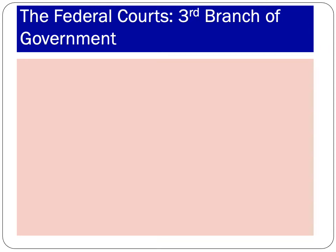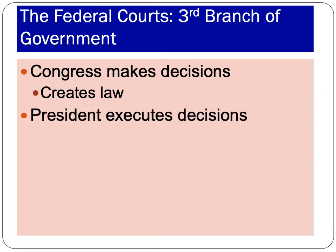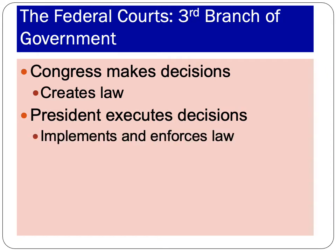This topic on the federal courts closes out our exploration of the institutions of government. The federal courts, or the judiciary, is the third branch of government. We've learned that Congress makes decisions — they create laws. The president and the executive branch execute those decisions; they implement and enforce laws. So what do courts do? What is the function of courts?